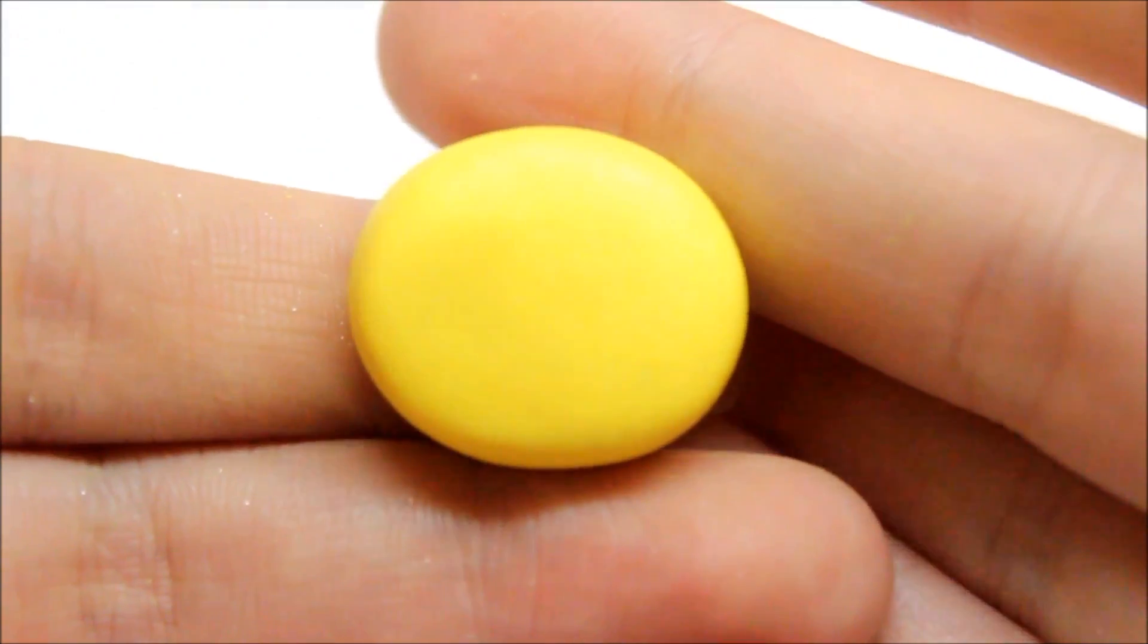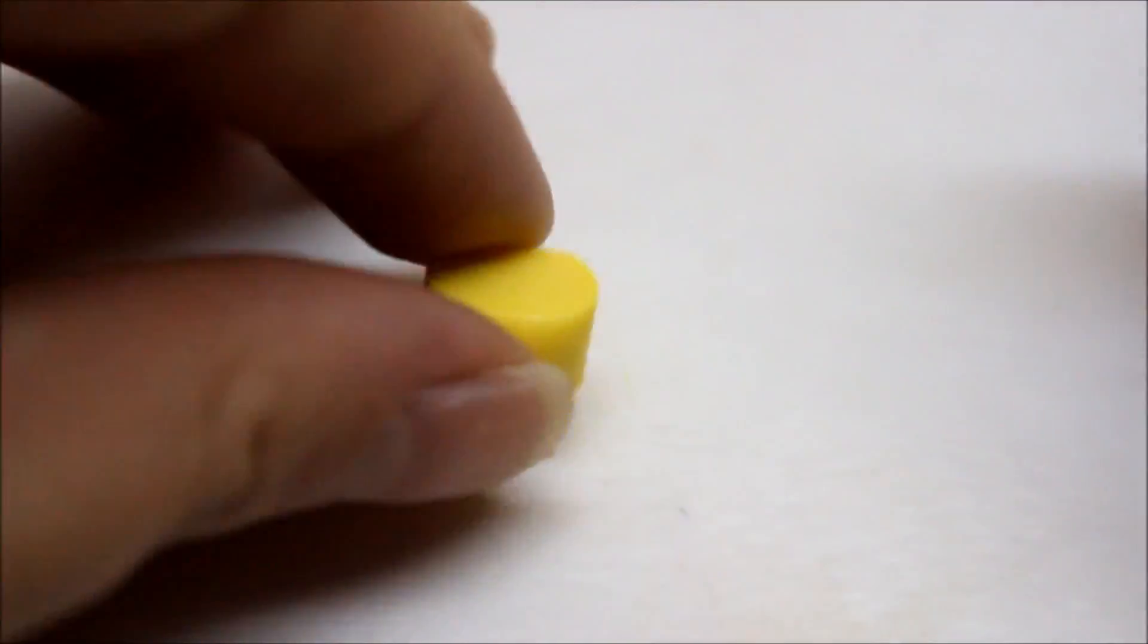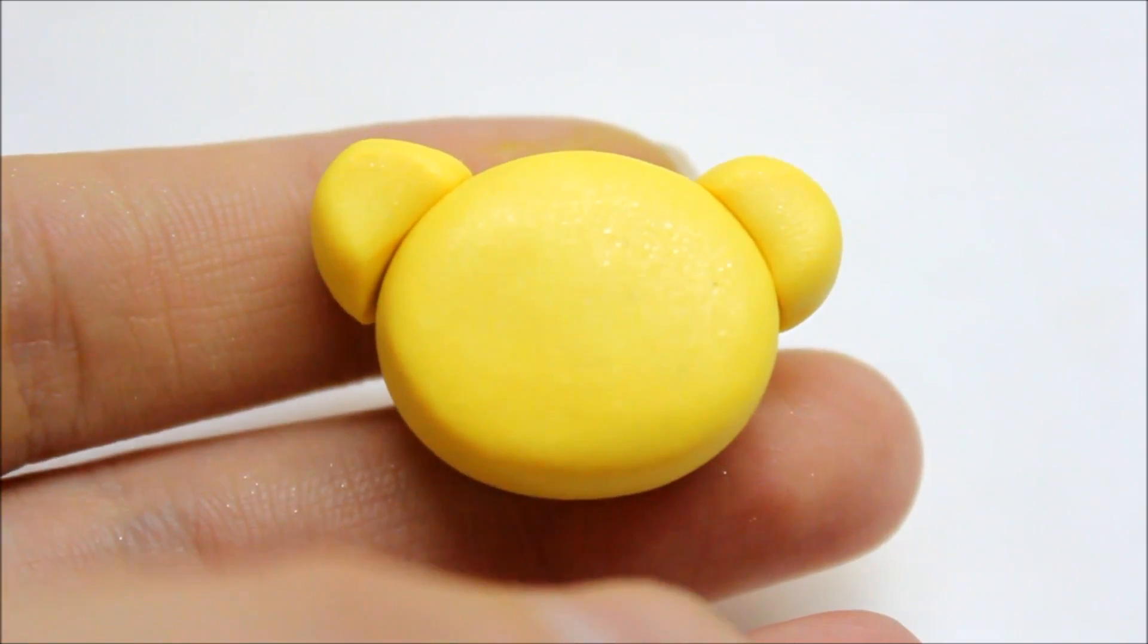You're going to roll out an oval for the head, add on the ears, and blend them together.